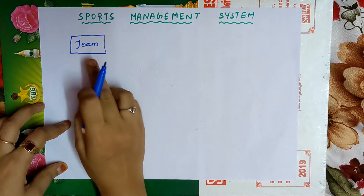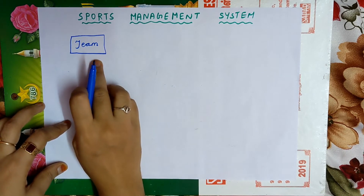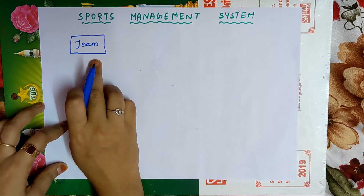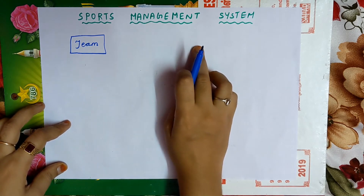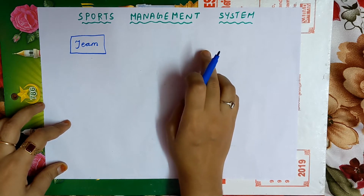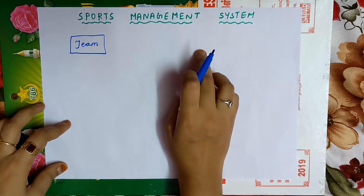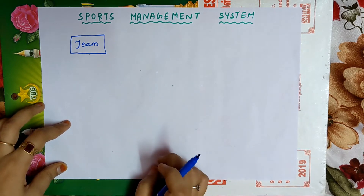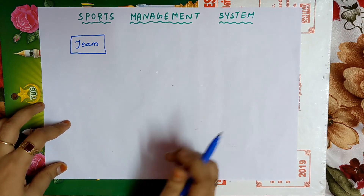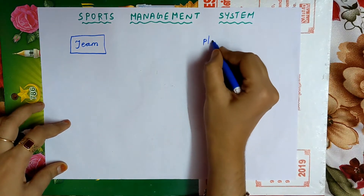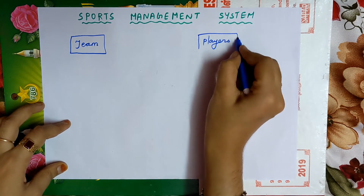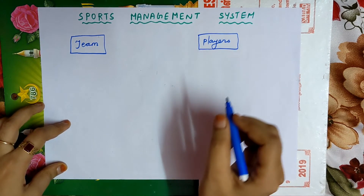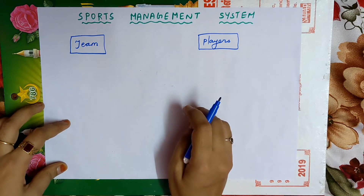Team is an entity. The next entity can be players. A player is a person — players means many people. Player is physically existing, therefore it is an entity. Players must be written inside a rectangular box.